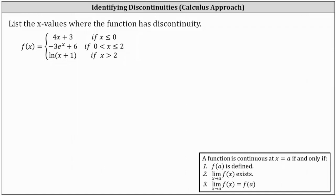Looking at our notes below, a function is continuous at x equals a if and only if all three conditions are satisfied. Number one, f is defined. Number two, the limit of f as x approaches a exists. And number three, the limit of f as x approaches a equals f of a.